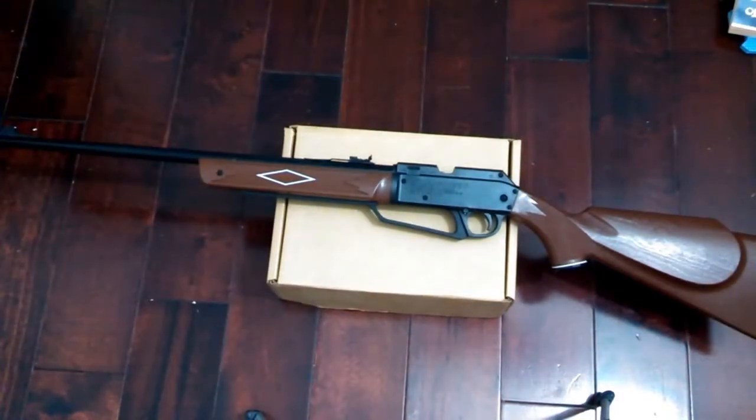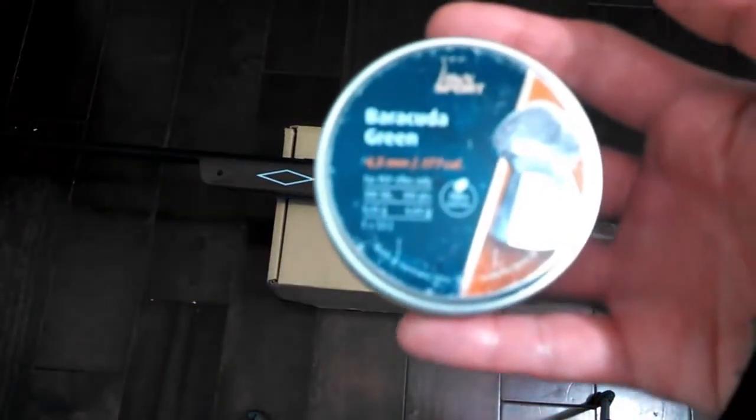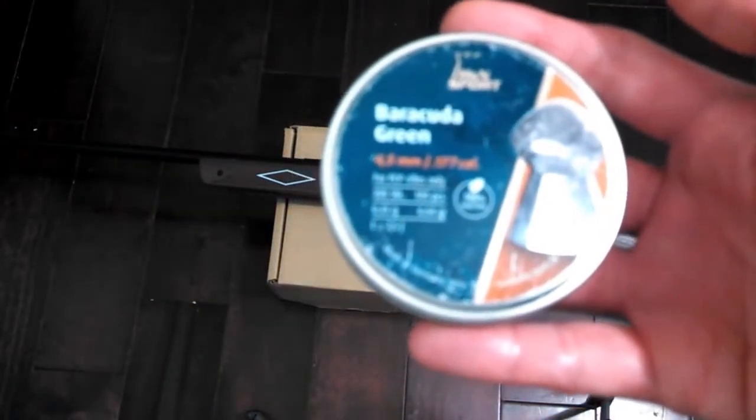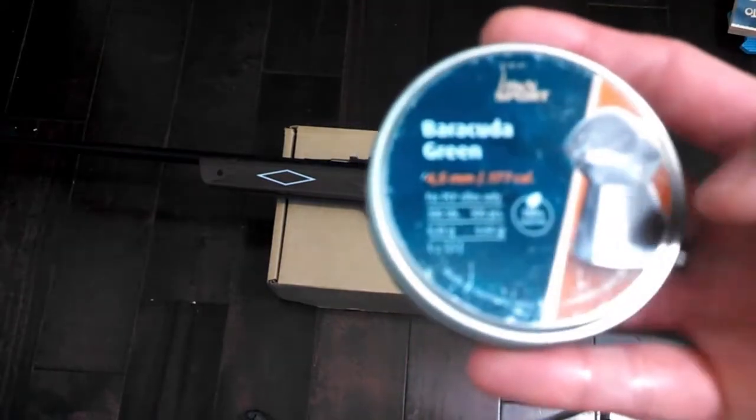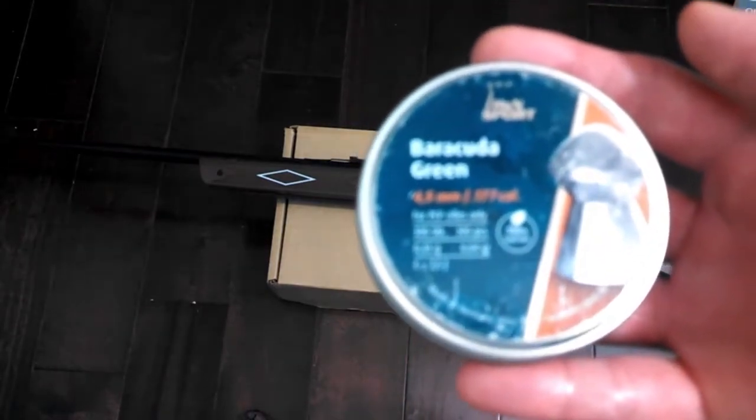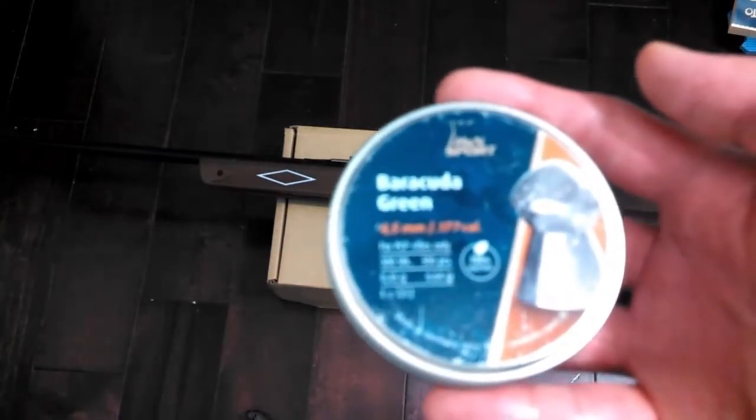As with most of my videos, I'll be testing it with these H&N Barracuda Greens, since they're the classic dome shape that most pellets tend to be. Weighing 6.64 grains, these definitely aren't what you'd consider heavy, but they're not as light as most Gamo PBA pellets either.